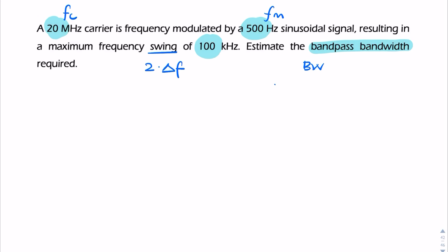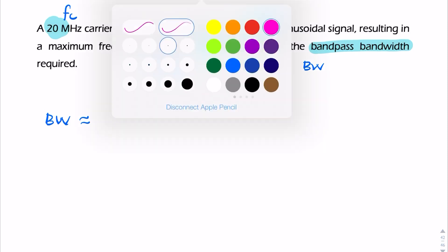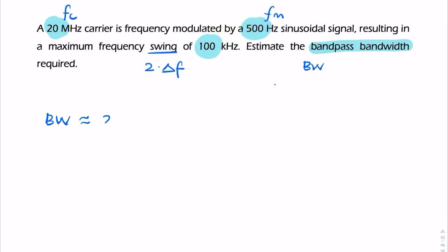So to find the bandwidth, we need to use Carson's rule. And clearly we have wideband FM here, just by looking at those two numbers, the order of magnitude, kilohertz and hertz. So we're looking at Carson's rule, 2(1 + β)fm.